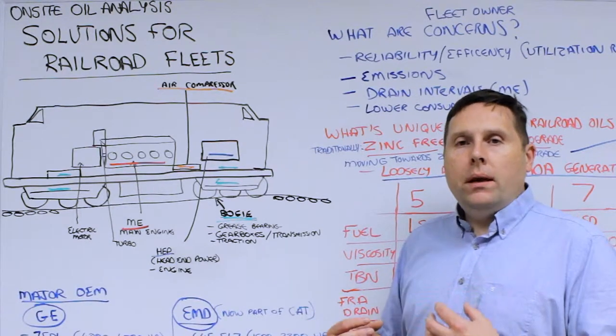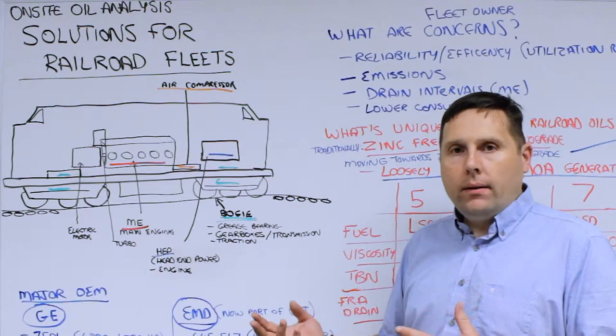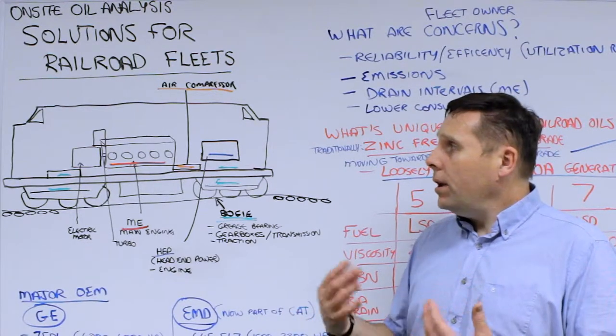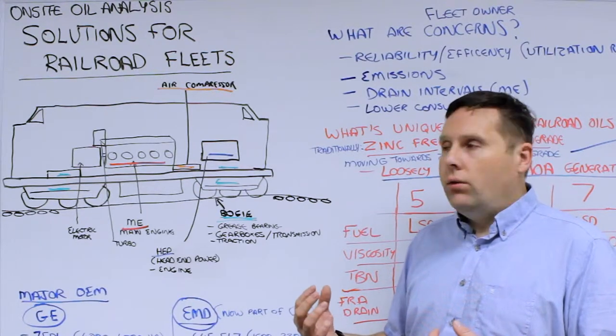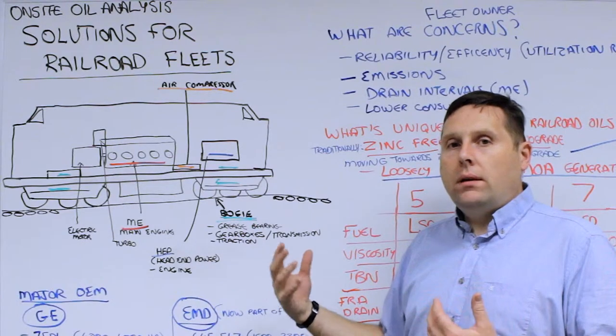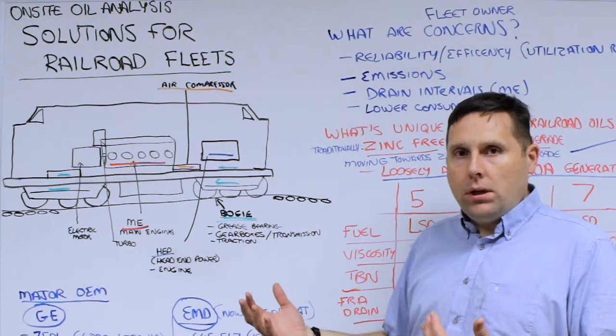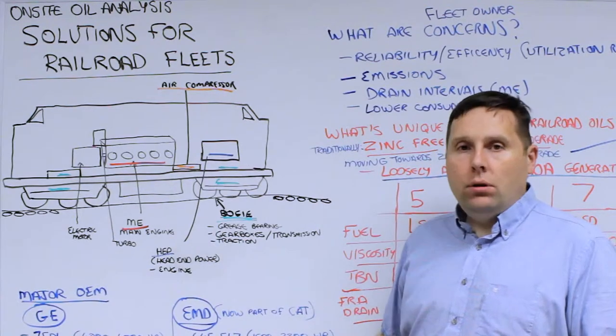A diesel electric freight train has various compartments that are lubricated and need routine monitoring. In addition to the main engine, also known as the ME or prime mover, you've got an electric motor supplying power to generators that drive the wheels.